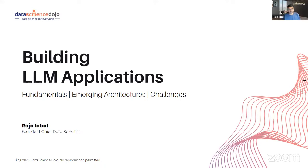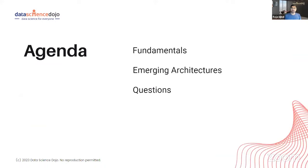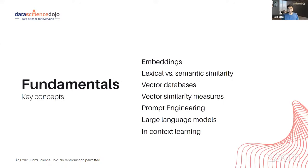Overall, a general appreciation of the architectures and the prevalent architectures, the common design patterns, and also what are the fundamentals you need to grasp to understand how an LLM application is built. Simple agenda: I will spend most of my time setting the fundamentals, because I cannot explain any design patterns or architecture without you understanding the fundamentals. For those who already understand these ideas, please bear with me. I will start with embeddings, then talk about semantic similarity, vector databases, vector similarity measures, prompt engineering, large language models, foundation models, and in-context learning.